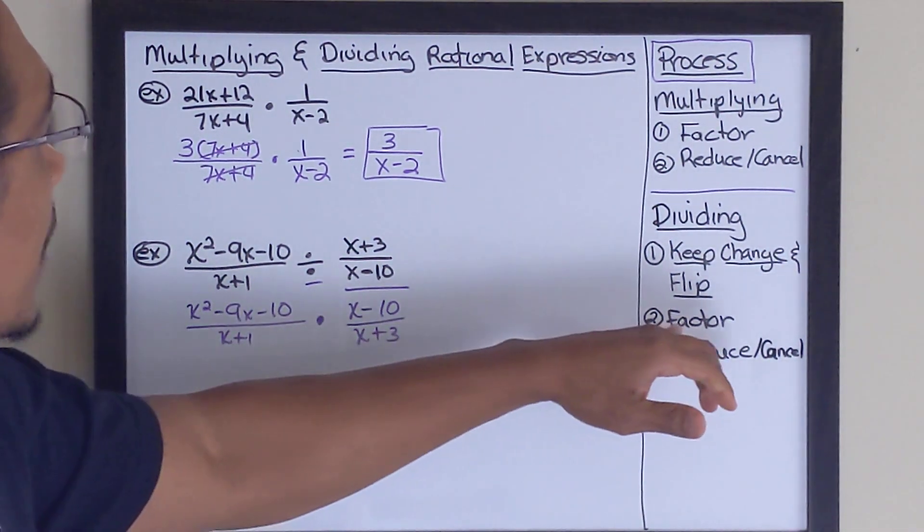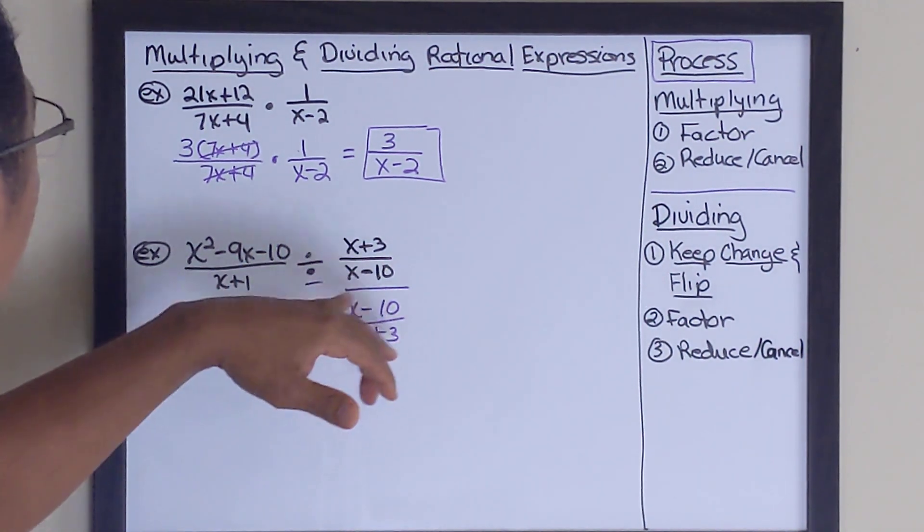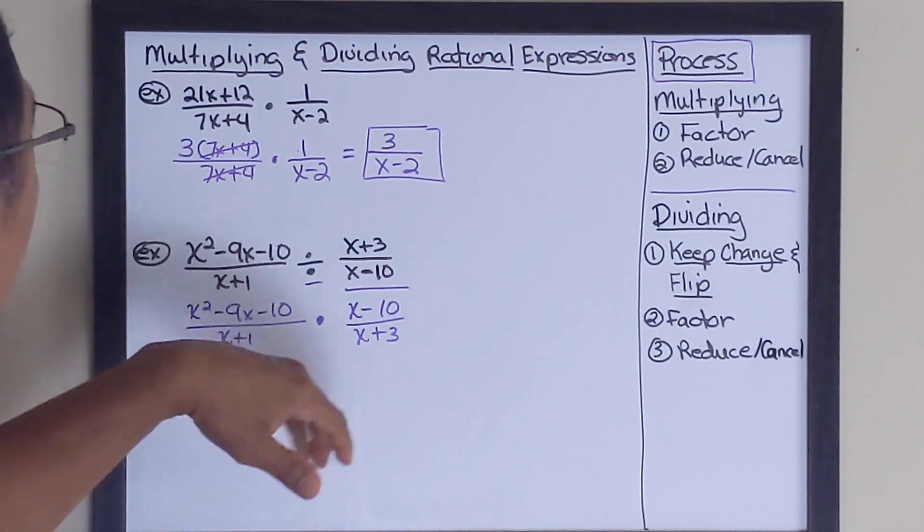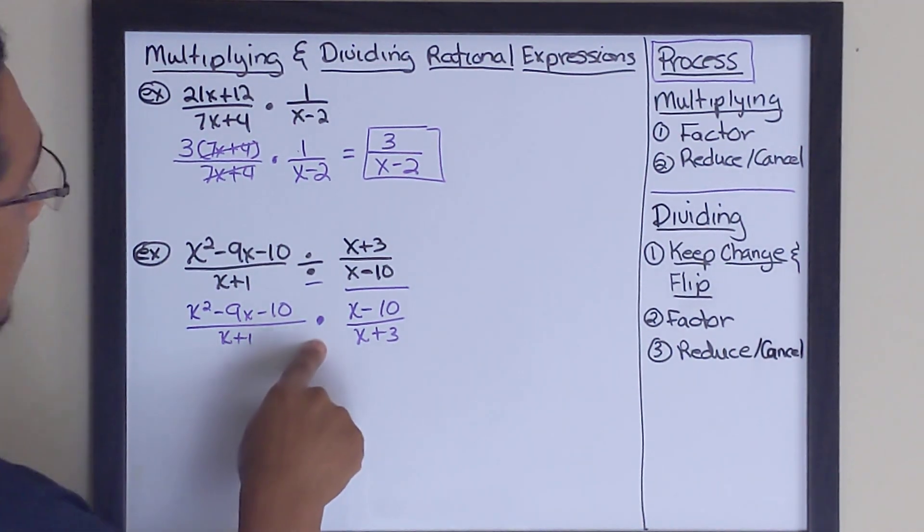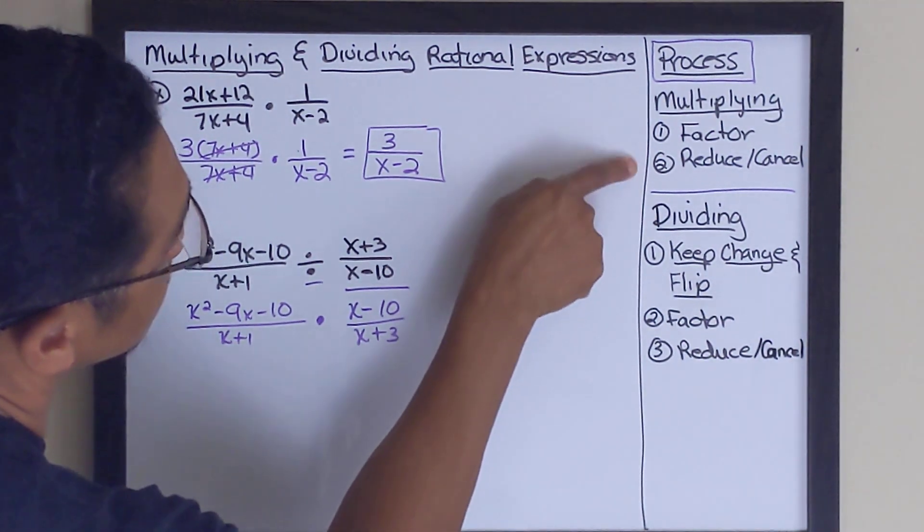So now we're going to move on to the part where we're factoring. We're going to factor whatever we can factor in the numerator or the denominator of our expressions. So the problem has become a multiplication problem. So we're down to these two steps here. Just like we were multiplying here.